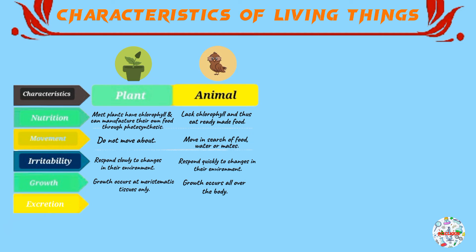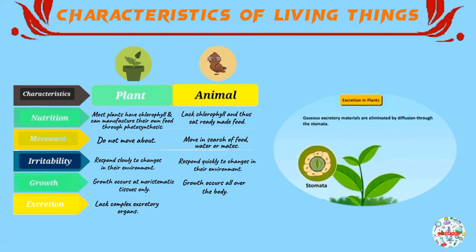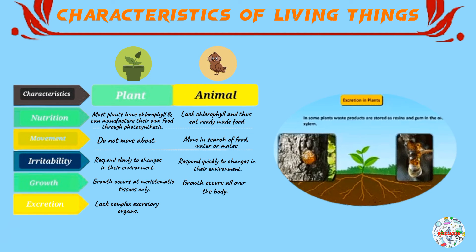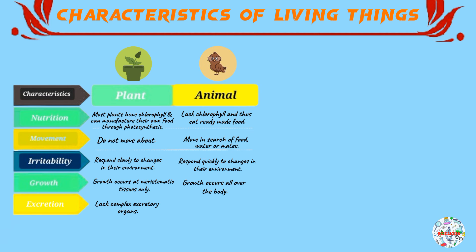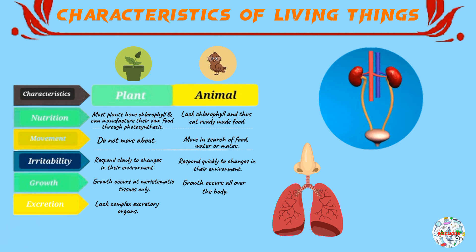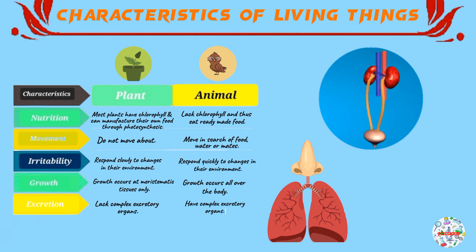Our last difference is with regards to excretion. When it comes to excretion, plants lack complex excretory organs — they don't have any complex excretory organs. The reason for this is because the waste products in plants simply diffuse out or they accumulate within certain parts and then they are removed. Their methods of excretion are simpler compared to animals. Animals, on the other hand, have complex excretory organs — we are talking about the lungs and the kidneys. When something is described as complex, it means it has many different parts that all work together to achieve a certain function. So, excretory organs in animals are quite complex compared to those of plants.